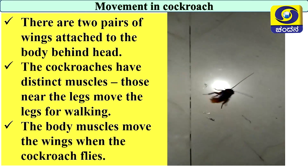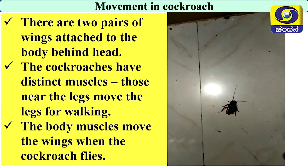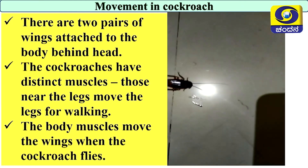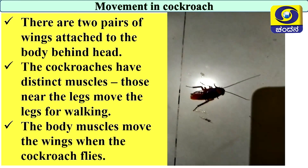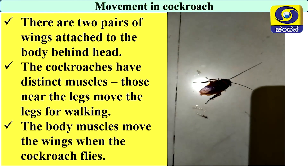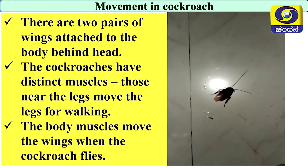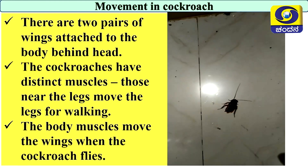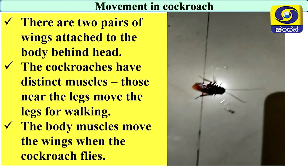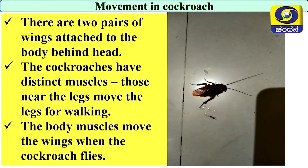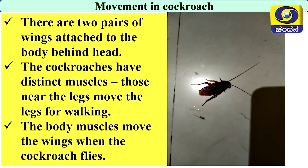Cockroaches have two pairs of wings attached to the body behind the head. The cockroach has distinct muscles — those near the legs move the legs for walking, while the body muscles move the wings when the cockroach flies. Three pairs of legs and two pairs of wings together help in the cockroach's movement.